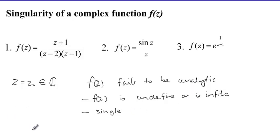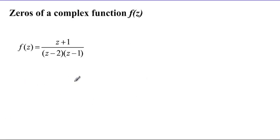Now, before we go further to classify the points of singularity, we also need to explain the concept of a zero of a function. A zero of a function f(z) is a point z equals z0 on the complex plane such that f(z) evaluated at z0 equals 0.